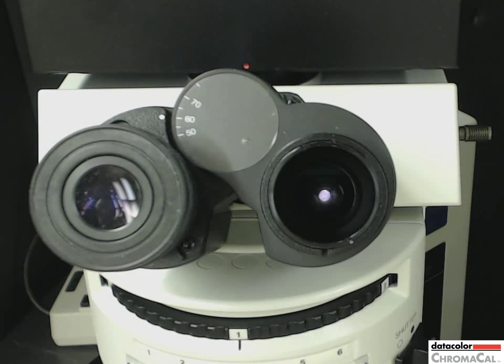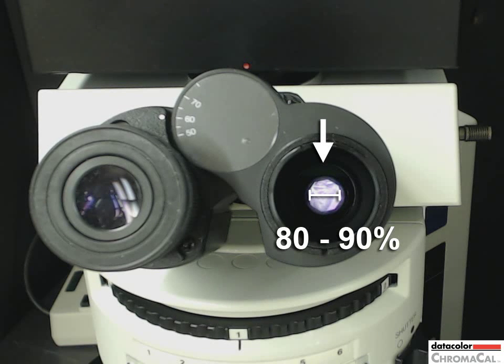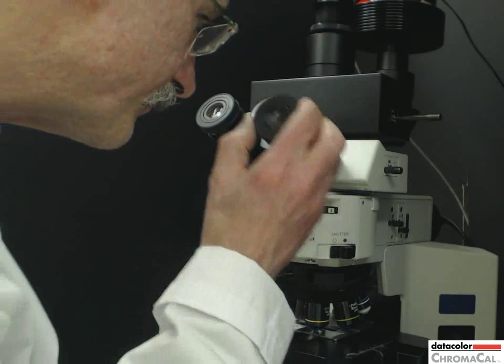Here's what you'll see when looking into the eyepiece chamber. Close the aperture until it allows 80 to 90 percent of the image area through, as seen here. Put the eyepiece back into its chamber.